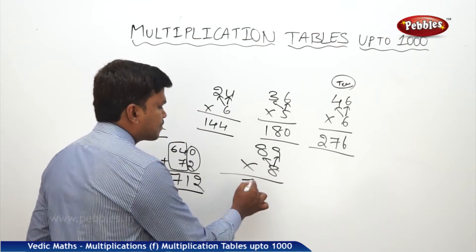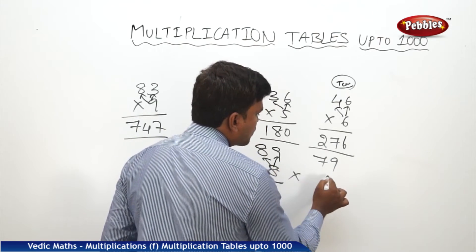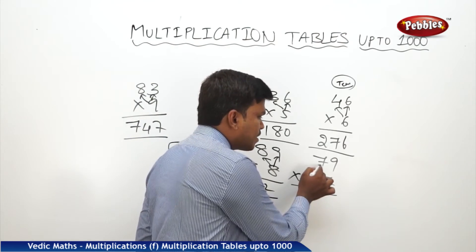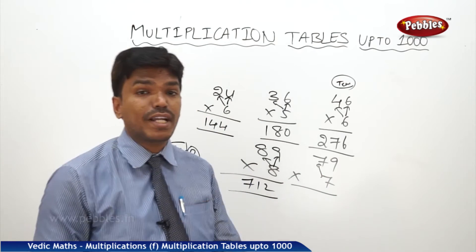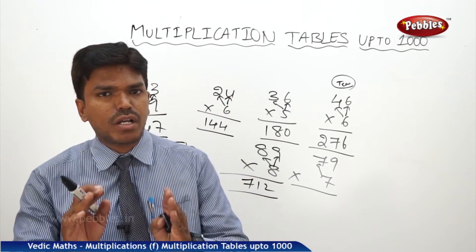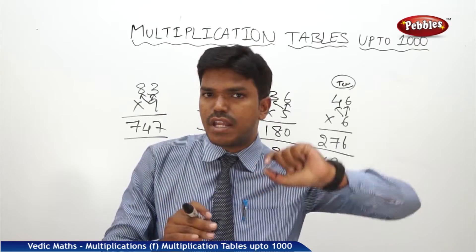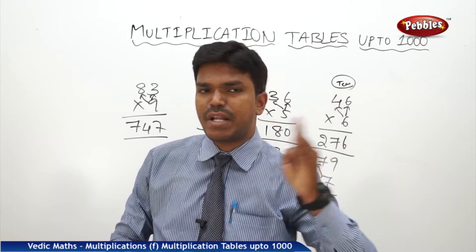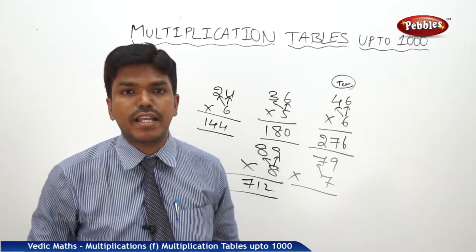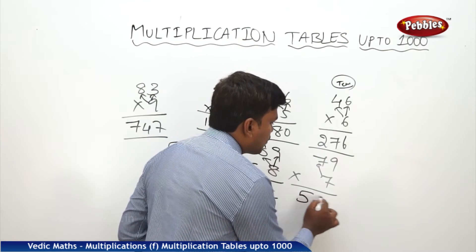One more example. 79 times 7. Same rule we are going to follow. 7 sevens is 49, but take it as 490. 490 plus 63. How to add 490 plus 63 in the mind? 0 plus 3 we get 3 as it is at the end, so just keep it aside. What is 49 plus 6? 49 plus 6 is 55, so my answer is 55 and 3, so answer is finally 553.